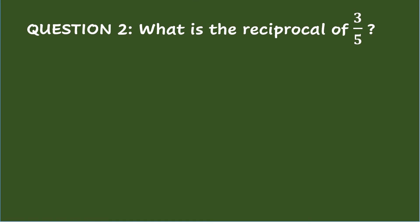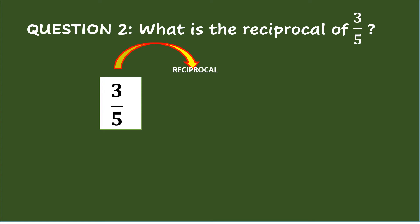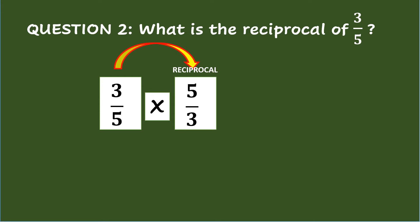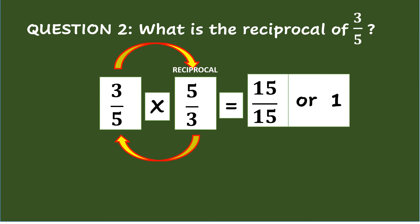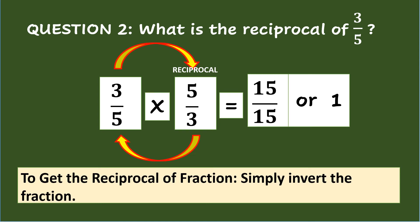Question 2. What is the reciprocal of 3/5? To get the reciprocal of a fraction like 3/5, just simply invert the fraction 3/5, so the reciprocal is 5/3. Multiplying the fraction 3/5 by its reciprocal will give the product of 1. Thus, multiplying the numerators 3 times 5 equals 15, and multiplying the denominators 5 times 3 equals 15. Therefore, 3/5 times 5/3 equals 15/15, or simplifying it is 1. To get the reciprocal of a fraction, simply invert the fraction.